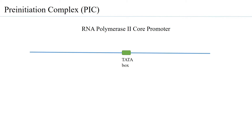The TATA box is positioned at around minus 30 — that is, upstream of the transcription start point. Just upstream of the TATA box is present another cis-acting element which is called the transcription factor 2B response element (BRE).